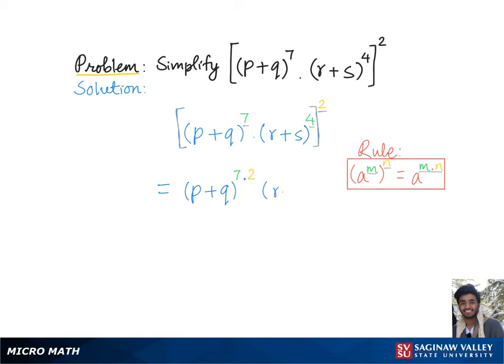Similarly, we will keep the base (r + s) and multiply the exponents, which is four times two, which gives us the final answer: (p + q) to the fourteenth times (r + s) raised to the eighth power.